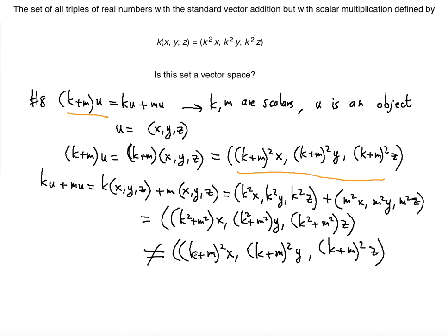But the middle term, 2KM, when you multiply the polynomial by itself here, is not going to give you this. It's going to give you one extra term, 2KM. So this is not equal. So in this case, this is not satisfied.